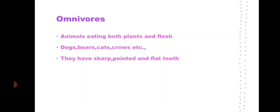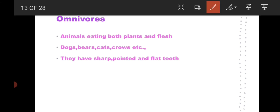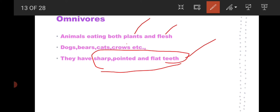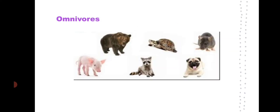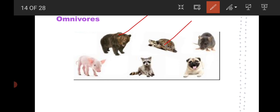Omnivorous animals eat both plants and flesh. Some examples of omnivores are dogs, bears, cats, and crows. They have both sharp pointed and flat teeth — combining the features that herbivores and carnivores have. Examples you can see here include bear, tortoise, mouse, cat, and dog. They can feed on both plants and flesh.